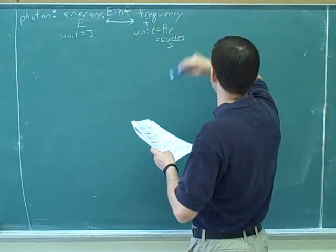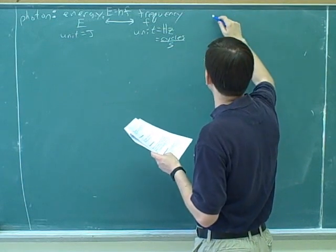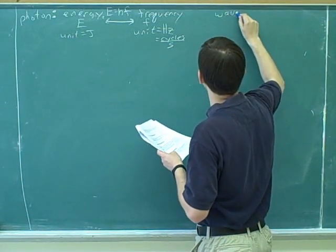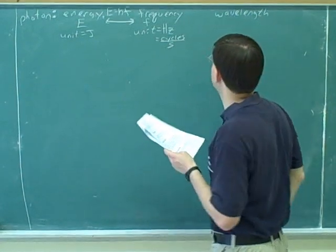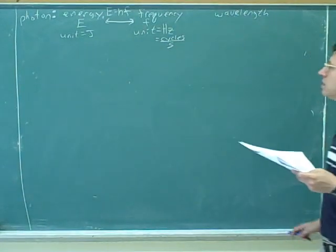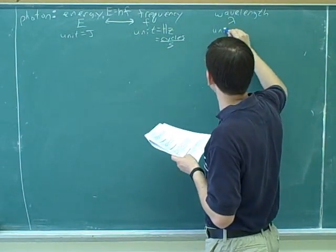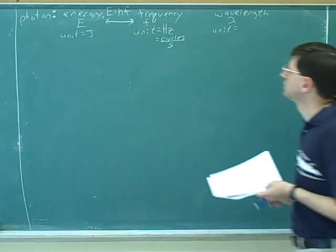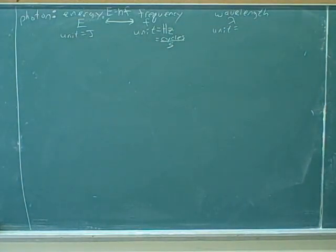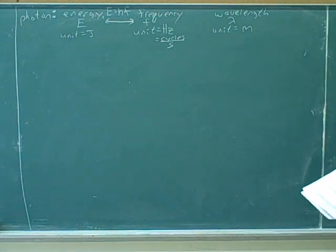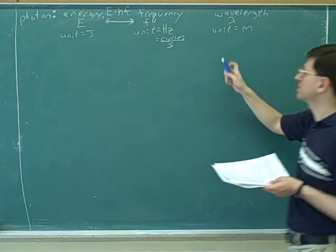Alright, and then another concept we might need here is the wavelength of the photon. And what's our symbol for wavelength? Lambda. And what's the unit for wavelength? Meters. Yeah, it's a length so it's in meters. Sometimes you might say meters per cycle, but actually I think most people just say meters. So that's good enough.